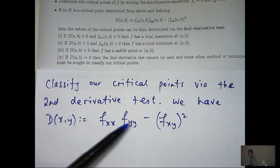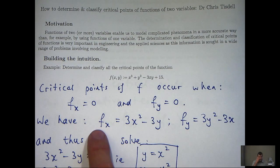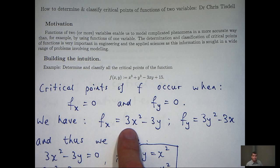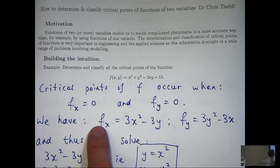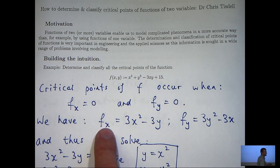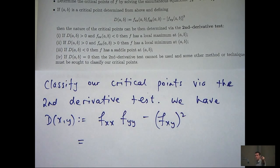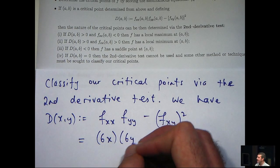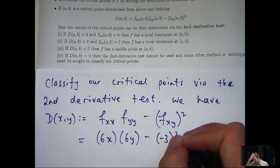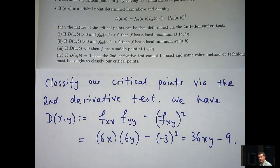Here we need to calculate these second derivatives. f sub x is this, f sub y is this, so f sub xx will be 6x, f sub yy will be 6y, and f sub xy will be minus 3. So we can now substitute in here and get a general expression.